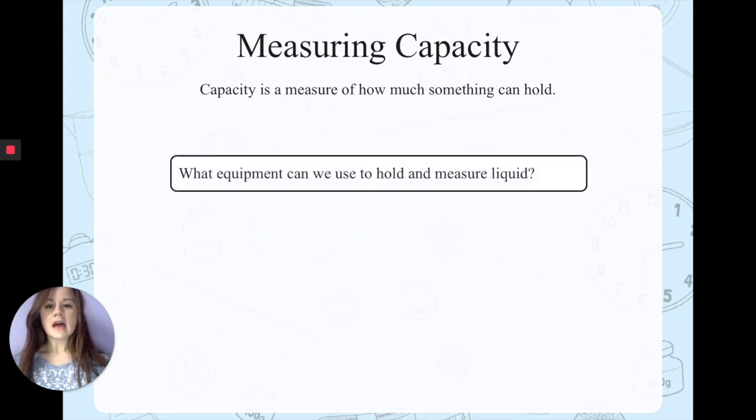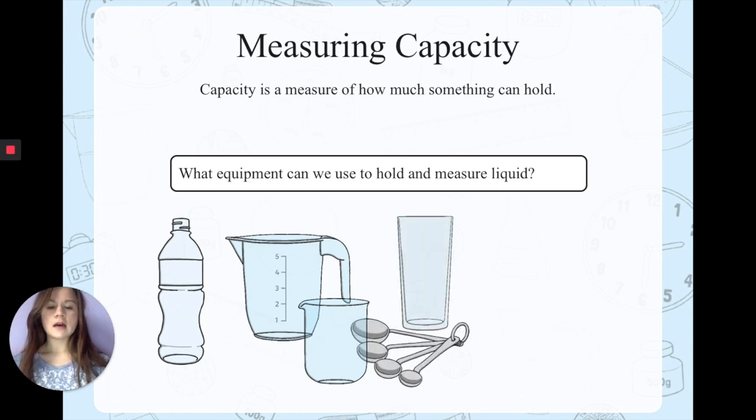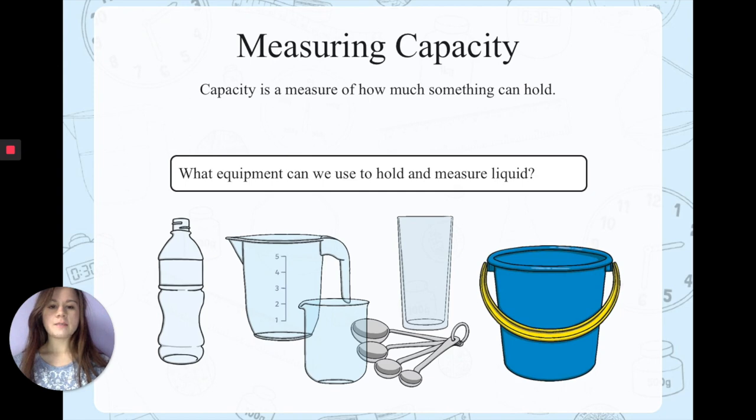Pause the video to tell your adult what different equipment we can use to hold and measure liquid. We can use bottles, measuring jugs, beakers, measuring spoons, cups or glasses, and buckets. Well done if you got any of those.